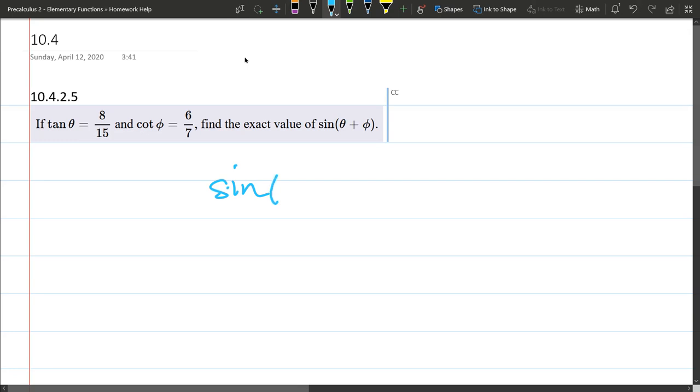So we got sine theta plus phi, not a and b, but theta and phi. And this is sine theta cos phi plus cos theta sine phi.